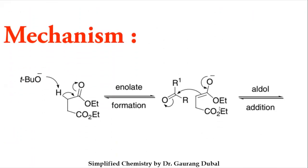In the mechanism, we start with diethyl succinate. There are two hydrogens at the alpha position, but we intentionally consider only one, because we want to take one proton from the alpha position — as learned in aldol condensation. The base (tert-butoxide) donates electrons, removing that alpha hydrogen. This generates a negative charge, which tautomerizes into enolate/enol formation.